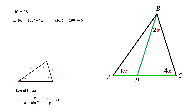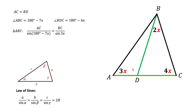We're going to apply the law of sines twice: once for triangle ABC, and once for triangle DBC. For triangle ABC, side AC divided by the sine of the opposite angle — which we just calculated as 180 minus 7x — equals side BC divided by the sine of 3x.